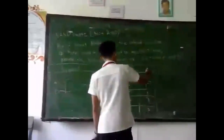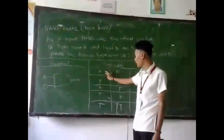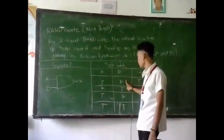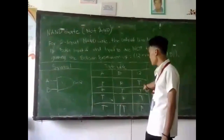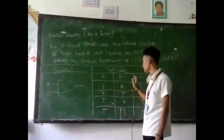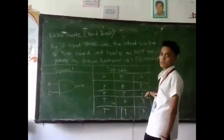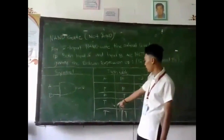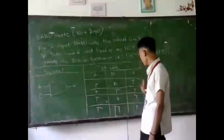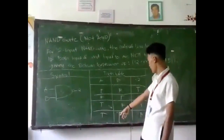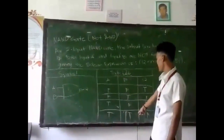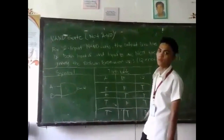Here is the output A. If input A is false and input B is false, the output is true. If input A is false and input B is true, the output is true. If the input is true and input B is false, the output is false. And last, if input A is true and input B is true, the output is false.